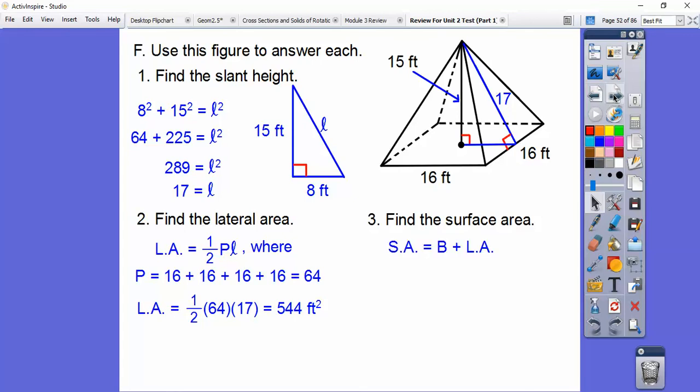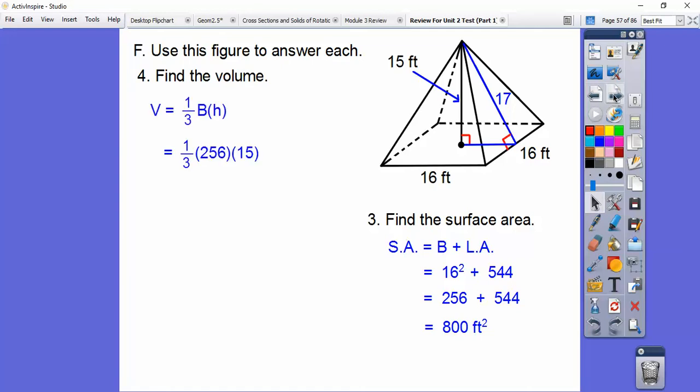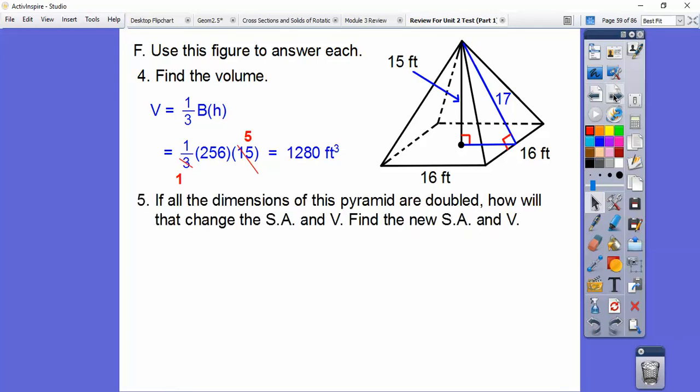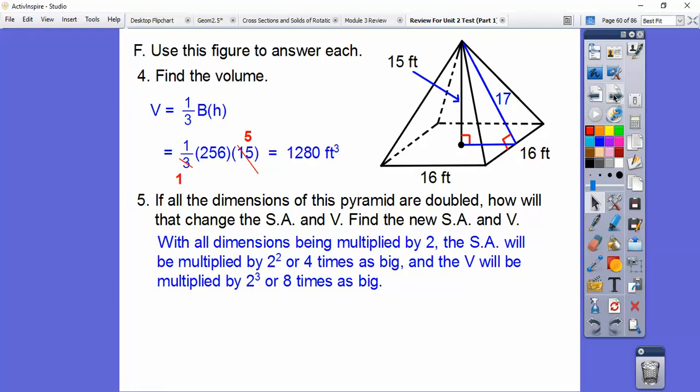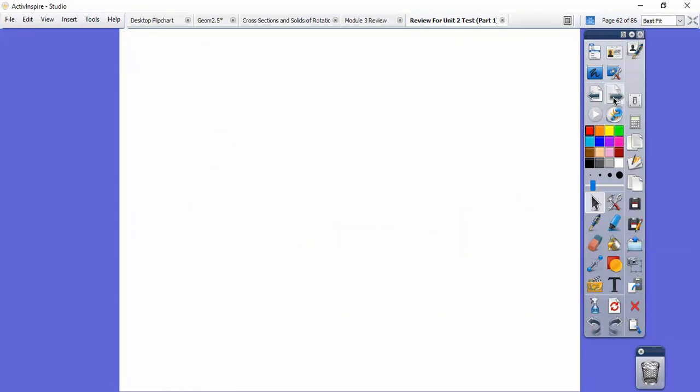Find the surface area. We just add the base. So it's 544 plus 16 squared. We get 800 feet squared. Find the volume. The volume is one-third the area of the base times the height. We get 1,280 feet cubed. If all the dimensions of the pyramid are doubled, how will that change the surface area and the volume? If it's doubled, that means times 2. That's our scale factor. The surface area is going to be 2 squared or 4 times as big. And the volume is going to be 2 cubed or 8 times as big. We take our surface area answer from before, multiply it times 4, and our volume answer from above, multiply it times 8.